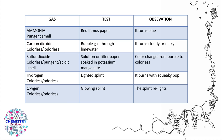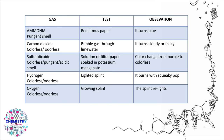Tests for gases: ammonia has a pungent smell and turns red litmus paper blue. Carbon dioxide turns lime water milky. Sulfur dioxide has a pungent acidic smell and decolorizes purple potassium manganate solution. Hydrogen — light a splint; it burns with a squeaky pop. Oxygen — use a glowing splint; it relights.